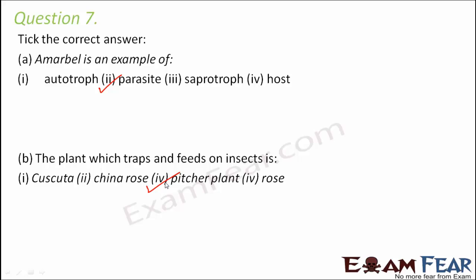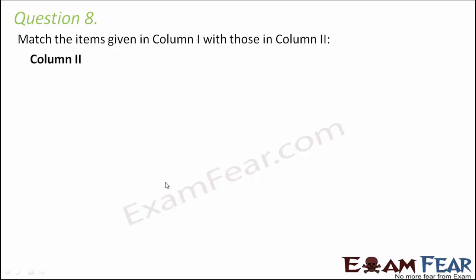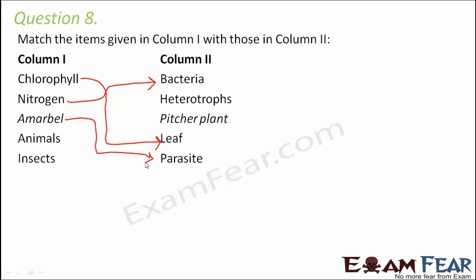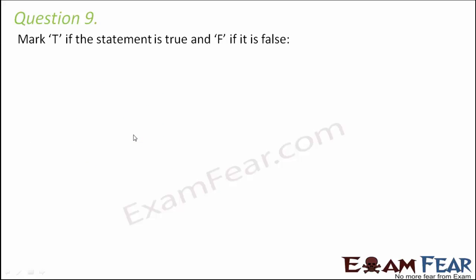Question number eight: Match the columns. Chlorophyll — present in the leaf of a plant. Nitrogen — a macronutrient for plants; they get it from the soil, and nitrogen-fixing bacteria fix it in the soil, so nitrogen matches with bacteria. Amarbale — a parasitic plant depending on other plants for food, so it is a parasite. Animals — all heterotrophs, depending directly or indirectly on plants for food. Insects — prey for the pitcher plant, which is an insectivorous plant.